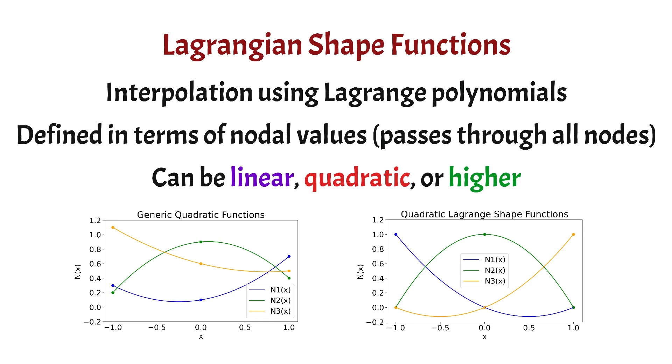Lagrangian shape functions can be linear, quadratic or even higher order depending on the number of nodes in your element. Each shape function has a very useful property, that is it's equal to 1 at its node and 0 at all other nodes. This is called the Kronecker delta property.